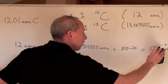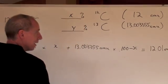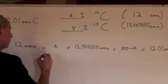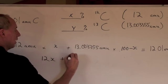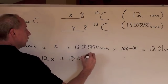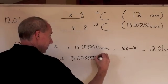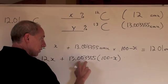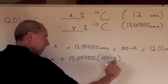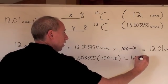And then of course to distribute, I got 12x plus 13.003355 times 100 minus x. Now by the way, I got to distribute this to this, this to this as well to equal 1201.